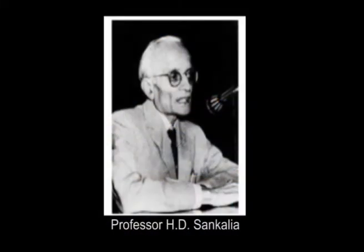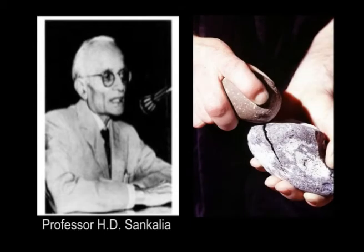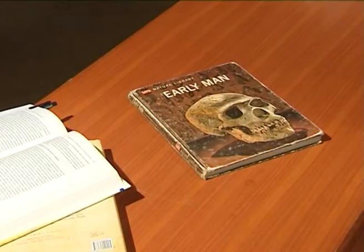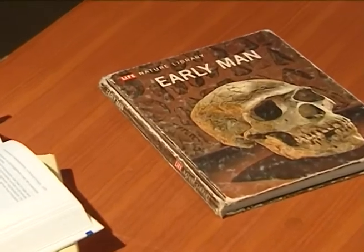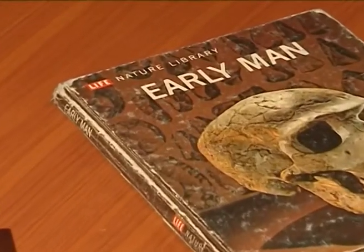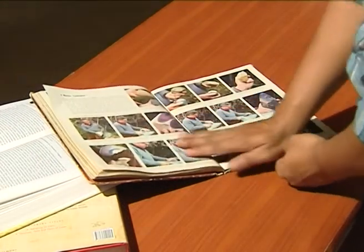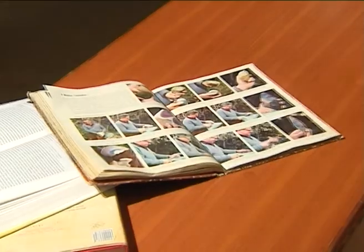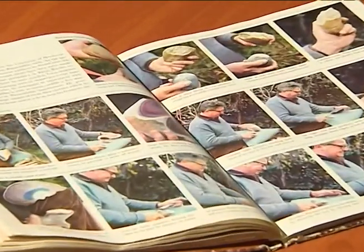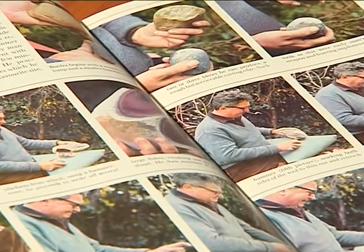According to Professor Sankalia, by studying the stone tools themselves, trying to imitate them today, and observing primitive or semi-primitive people making similar tools and using them. In the book Early Man, published by Life Nature Library in 1970, there are photographs showing the making of stone tools like the chopping tool, Acheulean handaxes, and laurel leaf points by Francois Bortz.